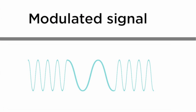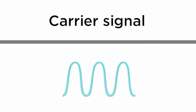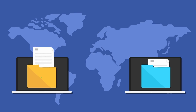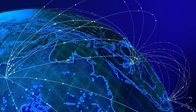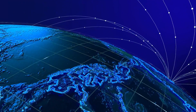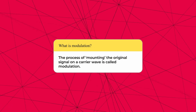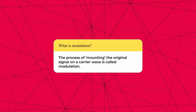Modulation is a process of adding meaningful information to a carrier wave so that it can be transmitted over long distances. When an electrical signal containing meaningful information needs to be transmitted over a long distance, it is added to a carrier wave. This process of mounting the original signal on a carrier wave is called modulation.